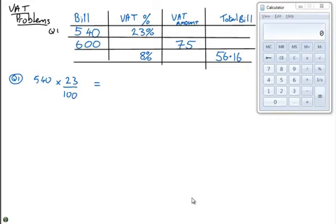This gives us a value of 540 multiplied by 23 and divided by 100, which will give us a value of €124.20, which will be 20 cent. So we can fill that into the table there, it's €124 and 20 cent.